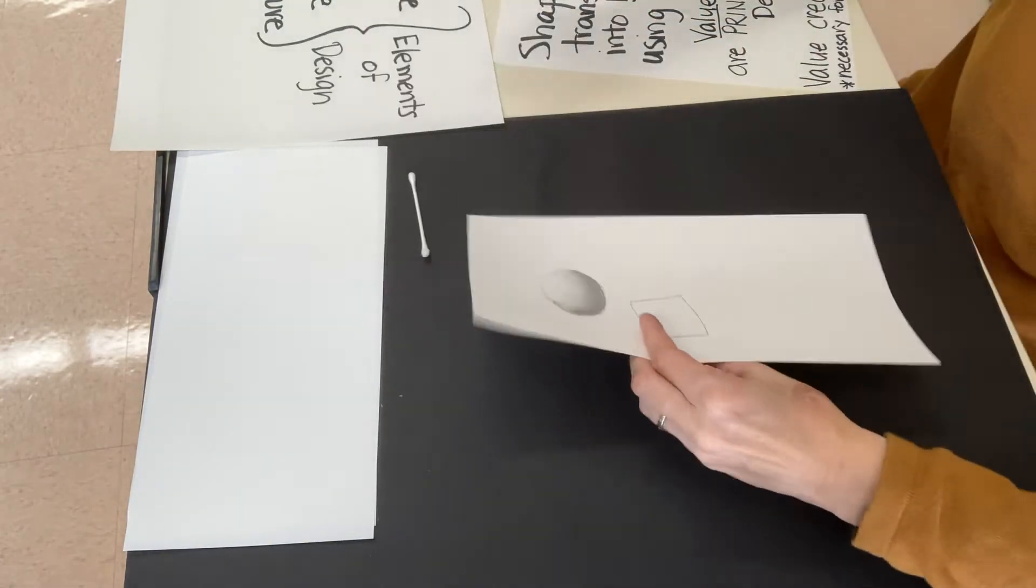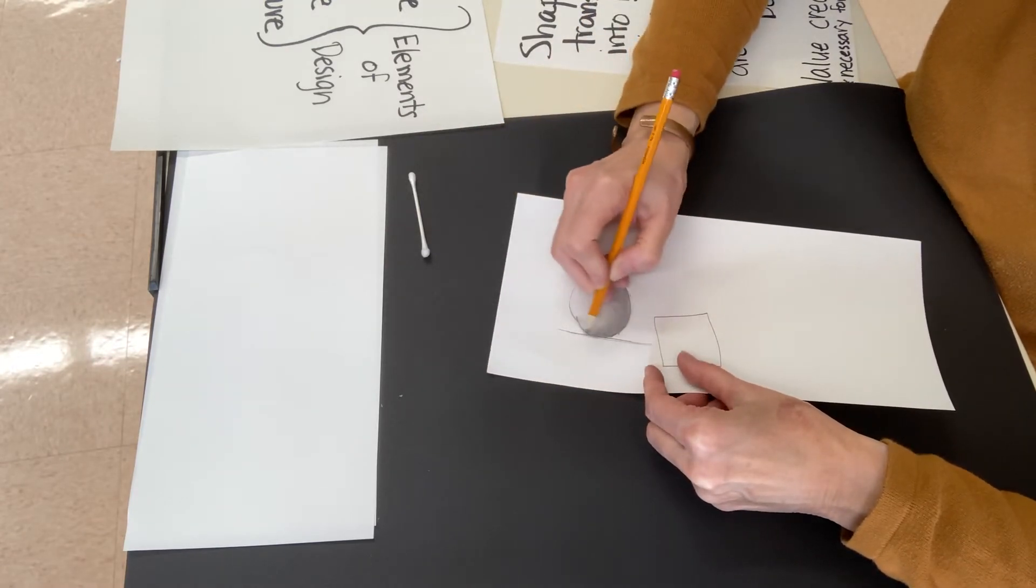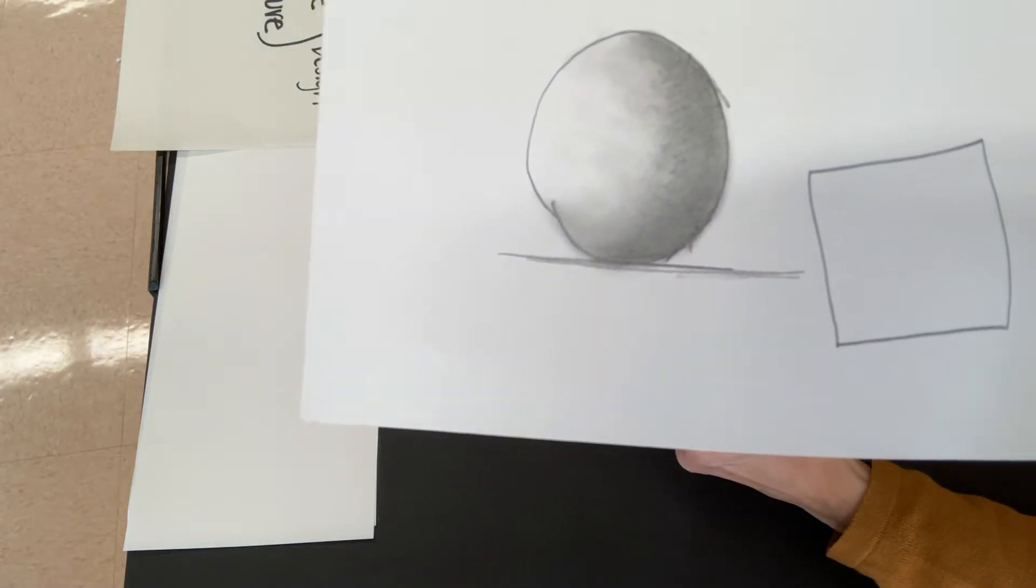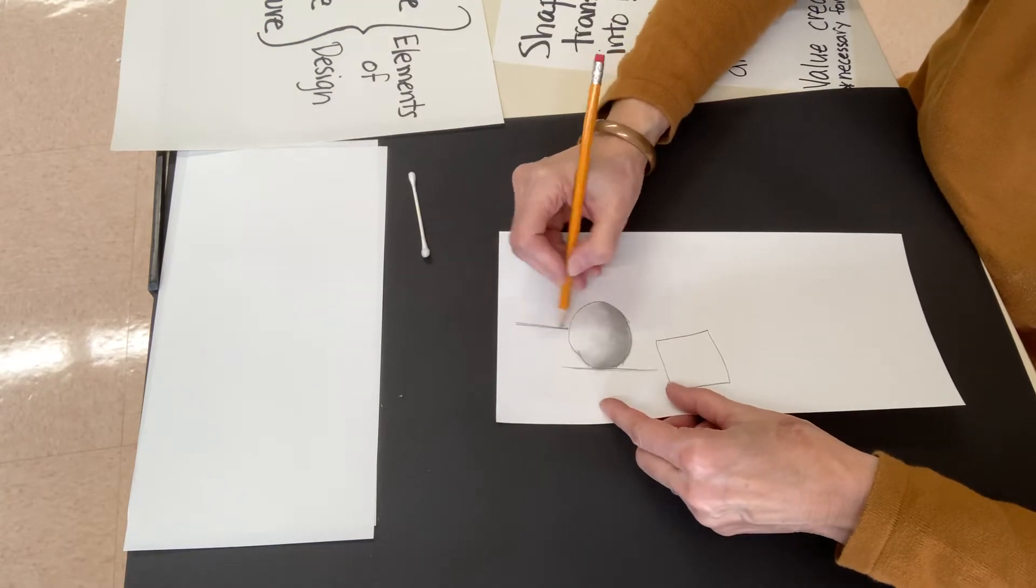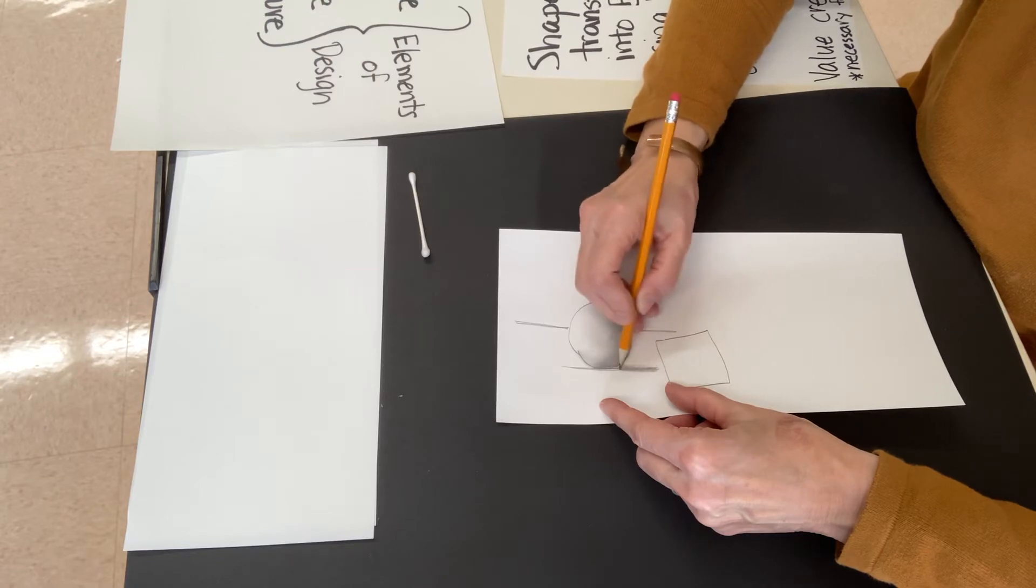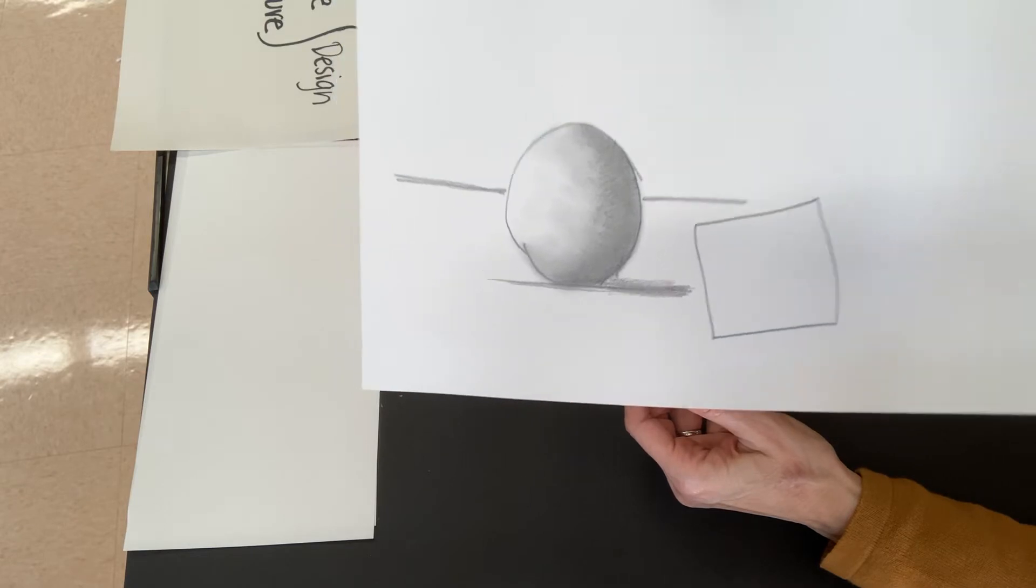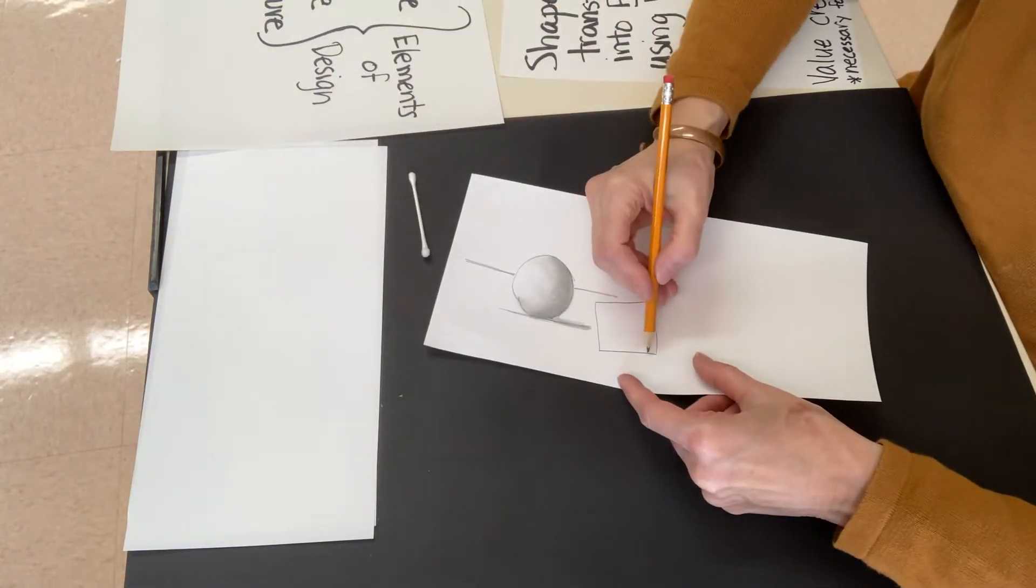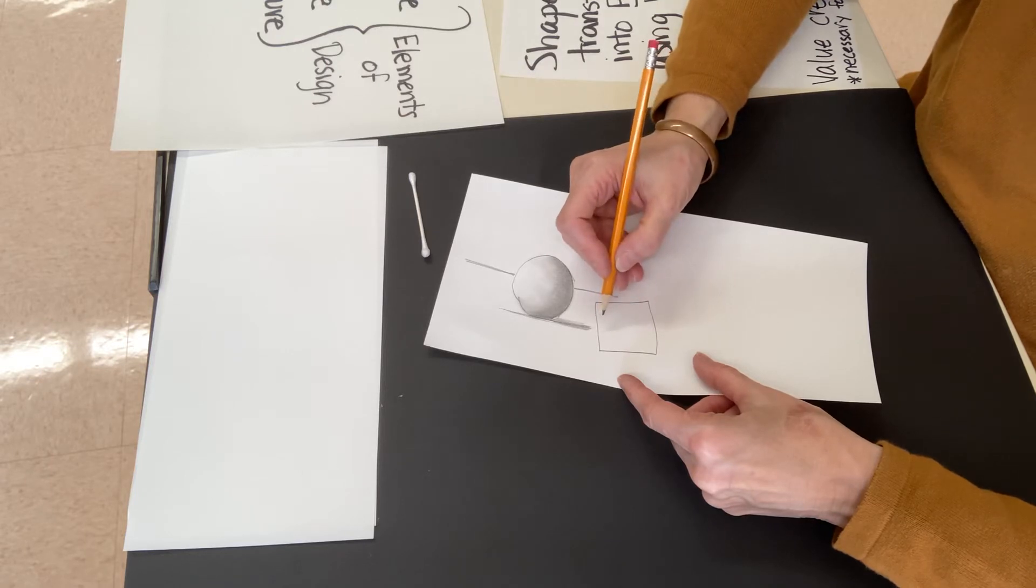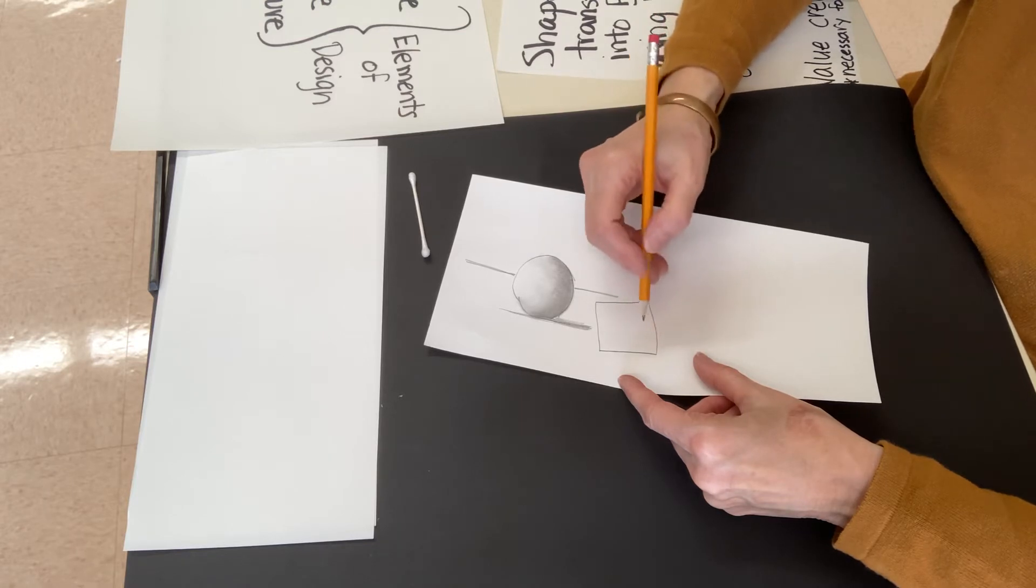I can make this even more realistic if I add a tabletop back here and create a shadow. In the case of the square, you would also need to draw the other sides in order to make it three-dimensional. But for the purposes of this project, we're just going to stick with just shading it in.